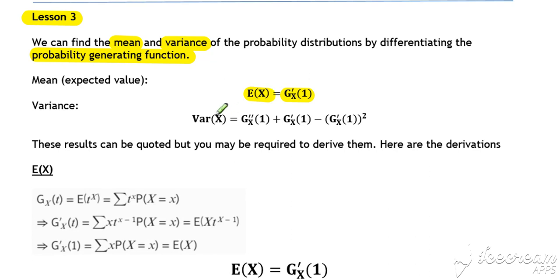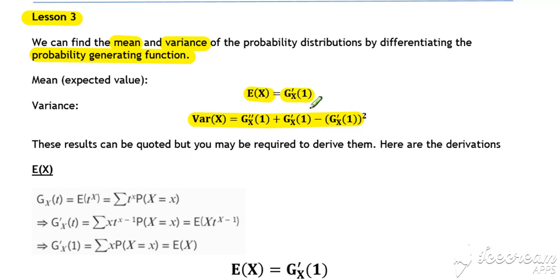We can also work out our variance by differentiating twice. So g''(x) evaluated at 1, take away g'(x) evaluated at 1, minus g'(x) evaluated at 1, all squared. So we've got standard quotable results that we can use for the expectation and the variance of probability generating functions that involve differentiation.